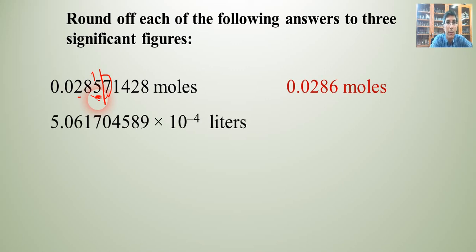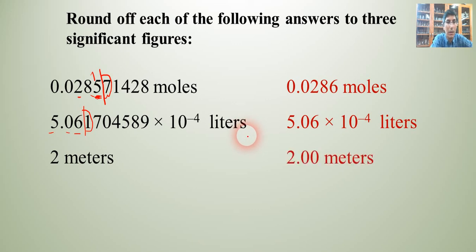I'll try the same thing there for this very small number of liters. We find the first non-zero number, and then we count from there, 1, 2, and 3. And we stop there, and that 1 makes it round down. So it's going to be 5.06 times 10 to the negative 4th liters. Here's another one. Sometimes you type a number into your calculator and you get a number that looks very well exact, for lack of a better word, 2 meters. How can you express that with three significant figures? Well, you just have to put a .00 on the end. So 2.00 meters.